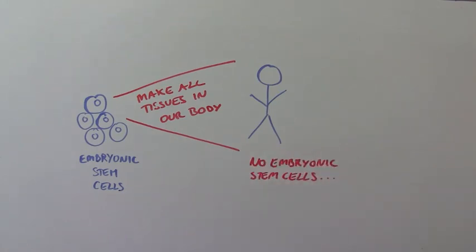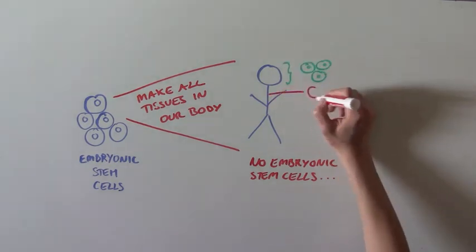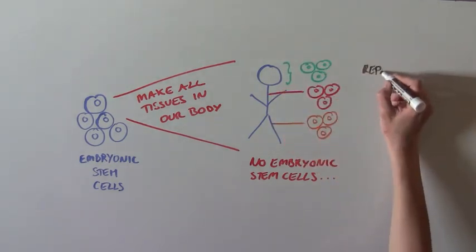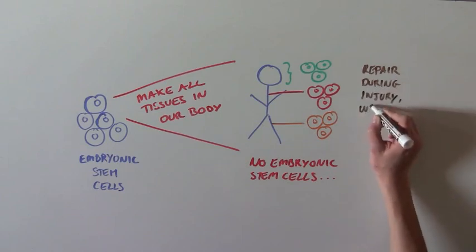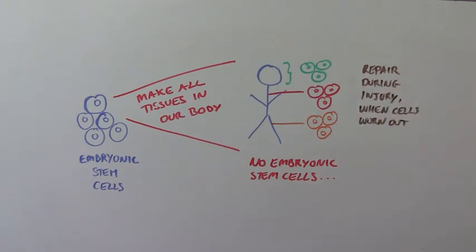In place of these cells, our tissues have their own specialized stem cells that can repair that specific tissue in case of injury or to replace cells that are worn out. But they can only produce cells of that tissue and no other tissue.